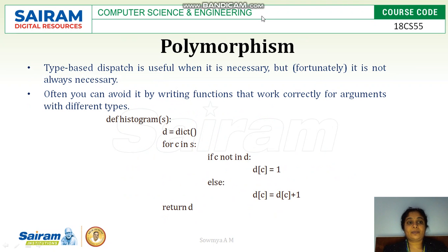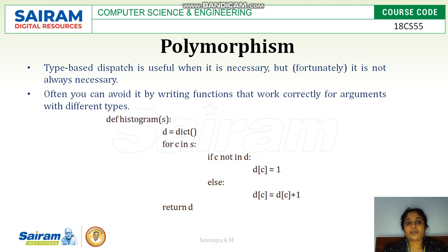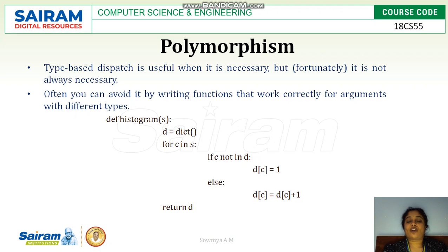The next topic is polymorphism. Type-based dispatch is useful when necessary, but it is not always necessary. To avoid it, we can write a function that works correctly for multiple types of arguments. This is called polymorphism — 'poly' means many, 'morphism' means type — so many types of arguments can be handled with a single function or method.